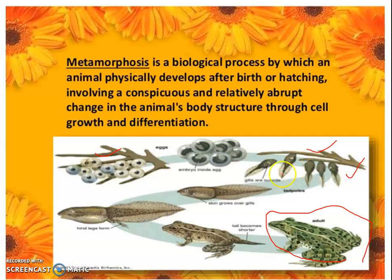In some animals, many body parts develop very quickly after birth — this process is called metamorphosis. For example, in human beings, at the time of birth the legs, head, and other body parts are already fully visible. But in the case of a frog, the young one does not look like the adult — it must gradually develop into a mature frog. The rapid development of body parts in such cases is the process of metamorphosis. Thank you very much.